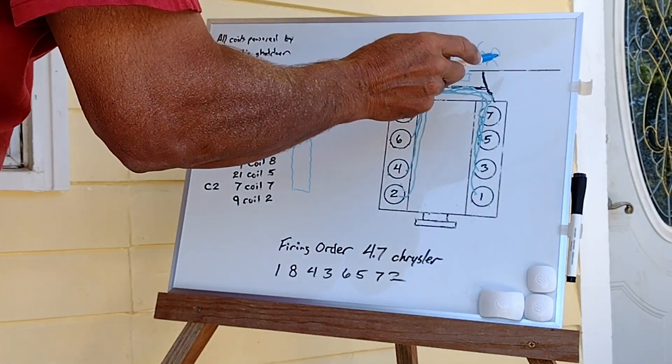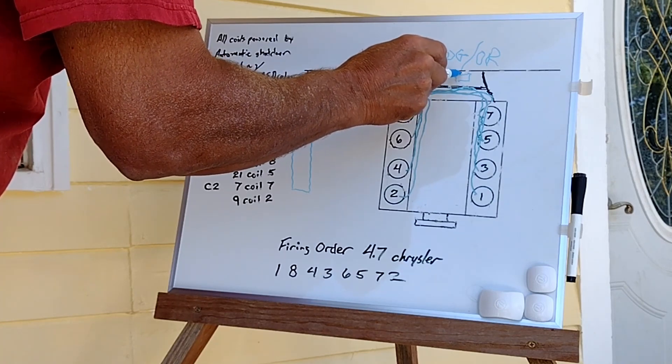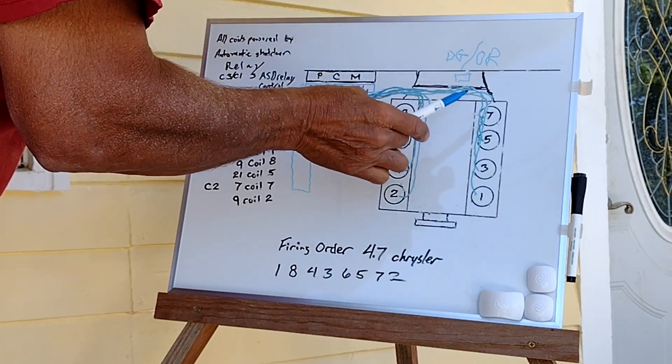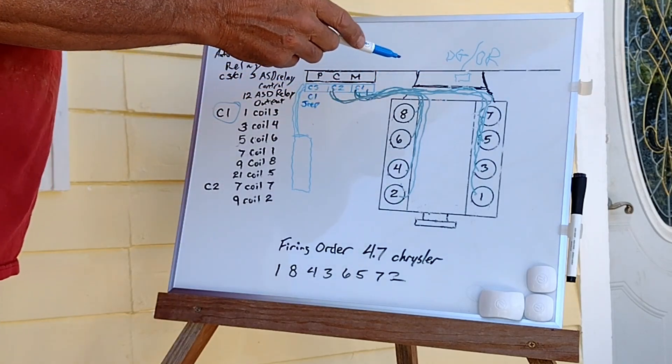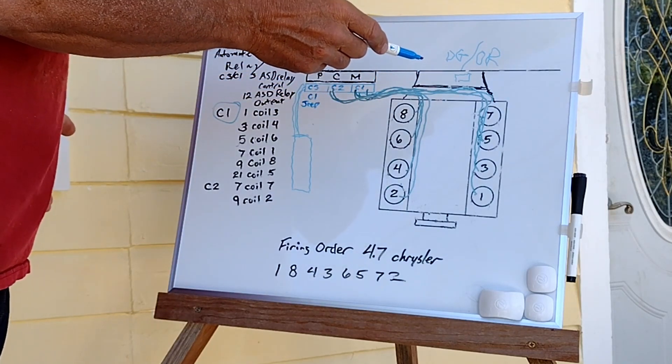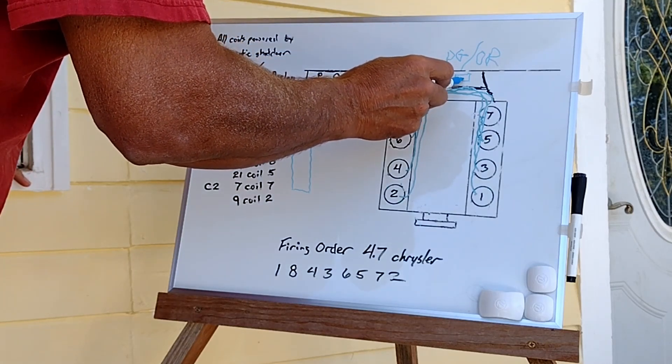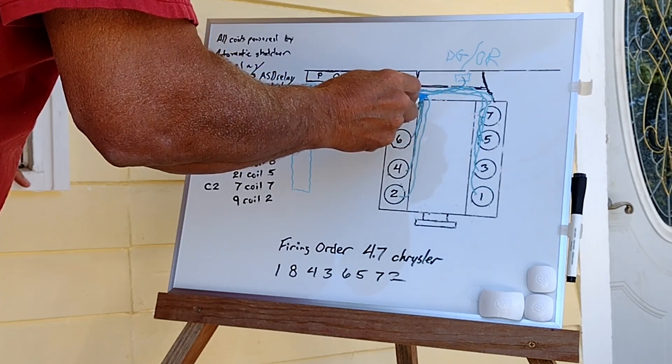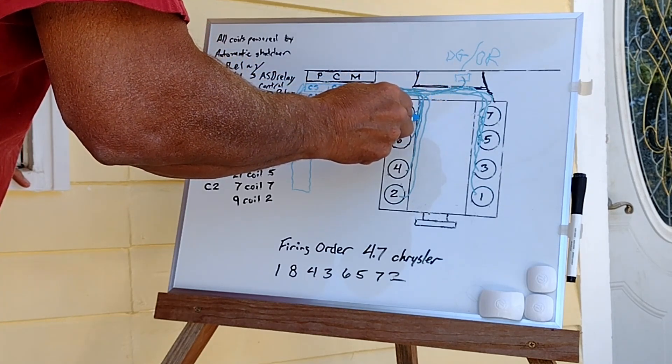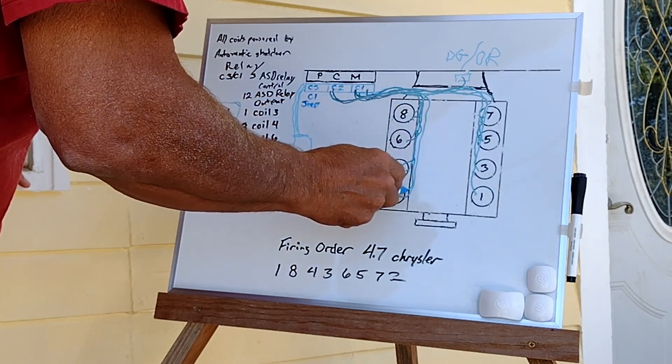Now from this Thomas and Betts connector, this is going to be part of your engine harness that you've harvested from your dead engine. You're going to locate that green with an orange trace, and you're going to come off of here, and you're going to split, and you're going to go to cylinder eight, six, four, two.